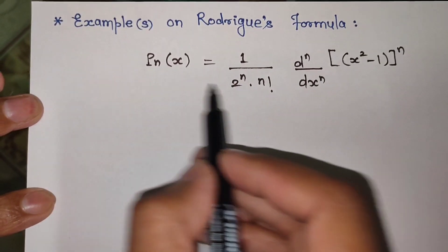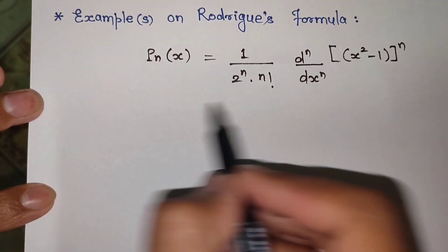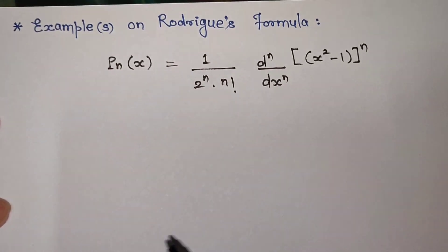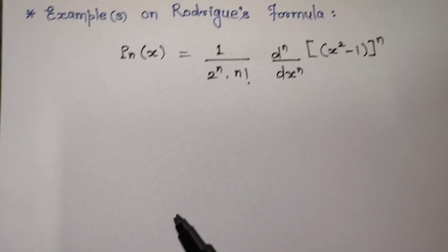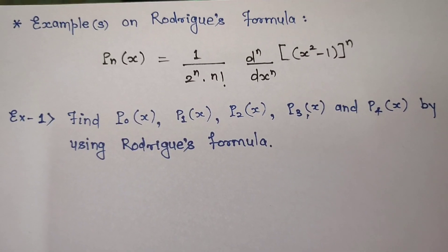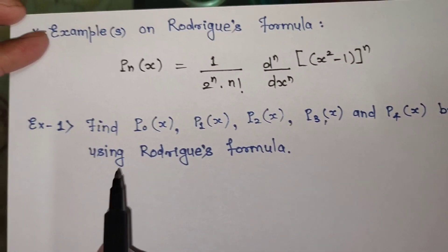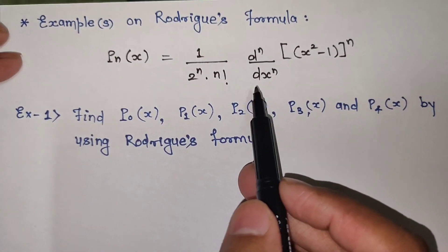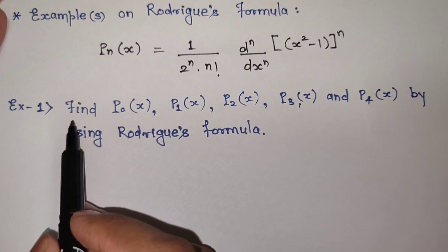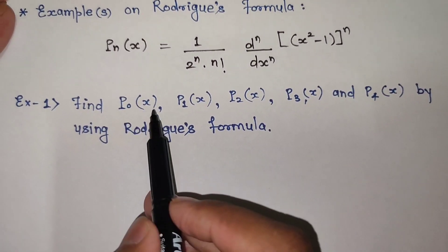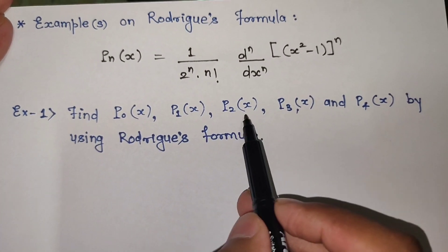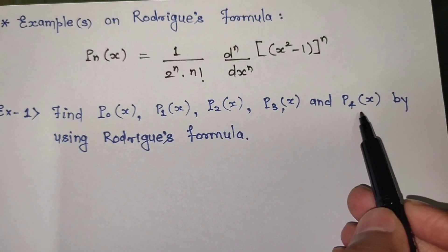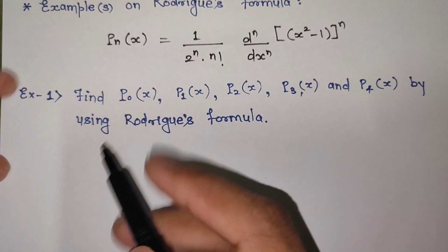In this learning video we are going to make use of this Rodrigues' formula to solve examples. The example asks us to find P0(x), P1(x), P2(x), P3(x), and P4(x) by using Rodrigues' formula.